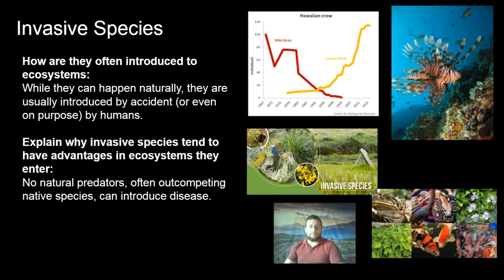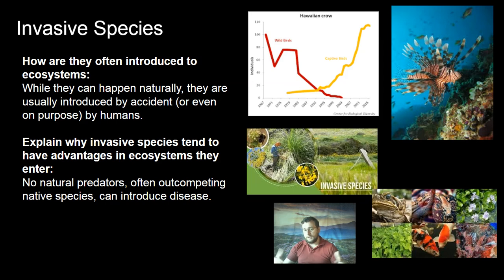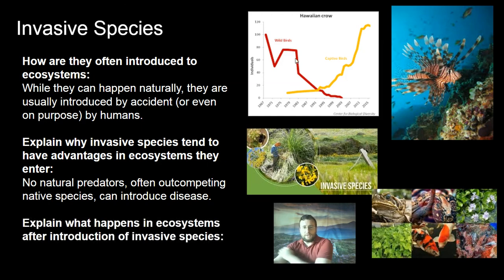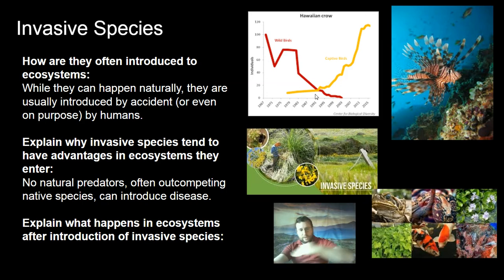Invasive species can also introduce diseases. For example, when humans came from Europe to North America, diseases like smallpox and the plague were introduced to Native Americans, who had no resistance and ended up dying. Likewise, a new plant or animal brought into an ecosystem could carry a disease that others there have no resistance to, killing a ton of organisms. The result is that when you introduce an invasive species, it will grow a lot while the species it competes with will crash — one increasing exponentially while the other crashes and nearly becomes extinct.